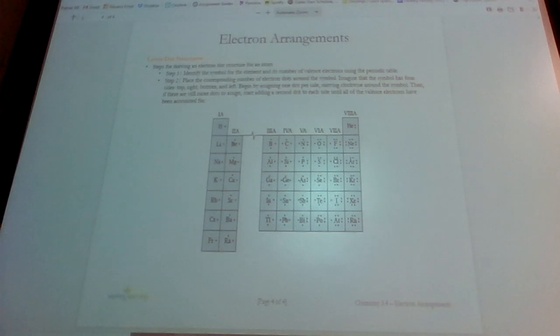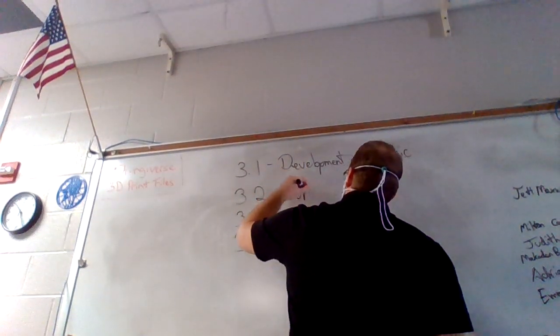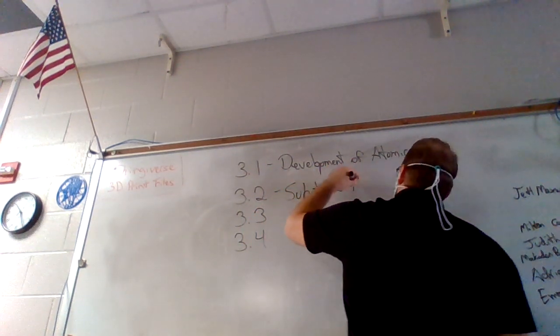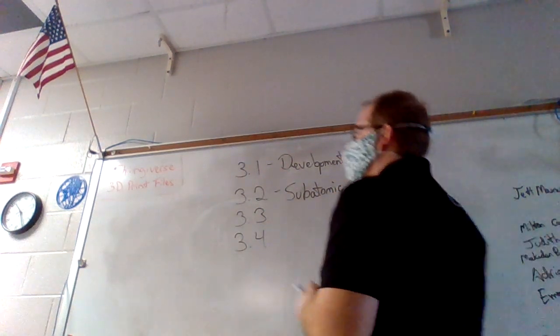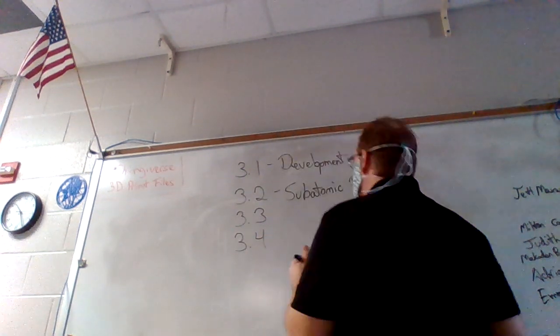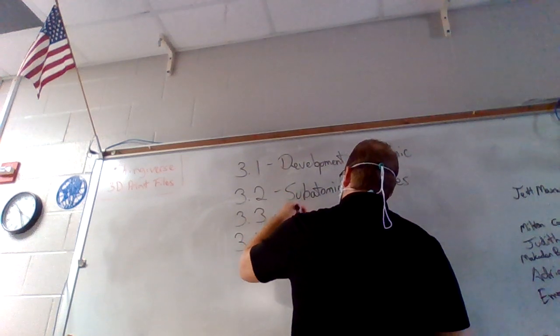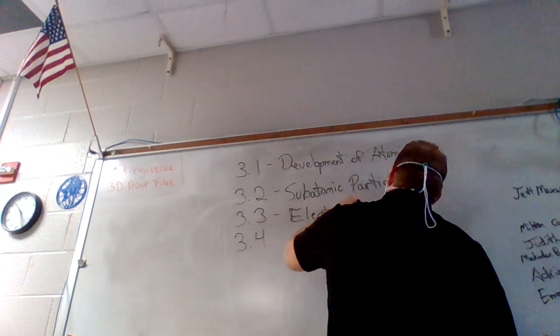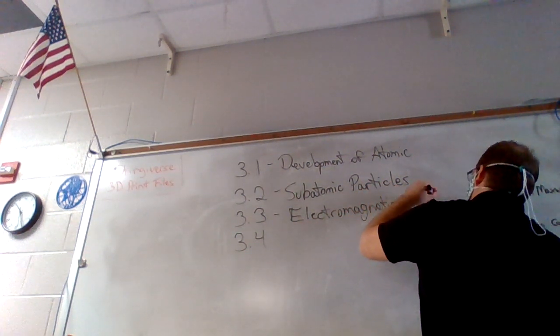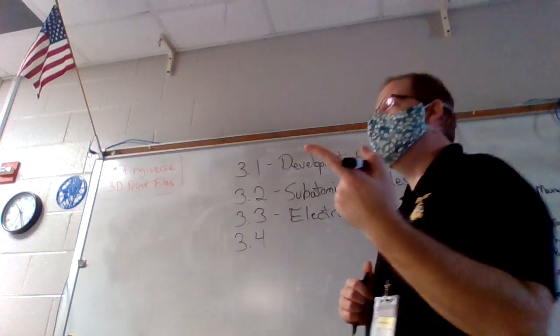What was the first one? It was development of atomic theory. We had that nice talk. It still had plenty of time to repeat. 3.2 was – I don't even remember the names of them anymore. 3.2 was subatomic particles. 3.3 is the electromagnetic spectrum. The electromagnetic spectrum. And the last one is electron arrangements.